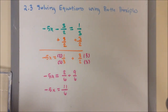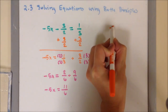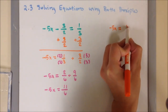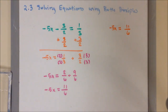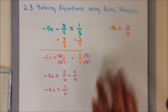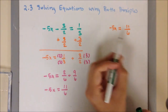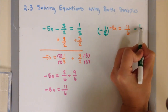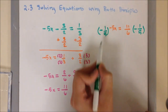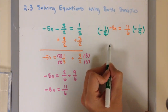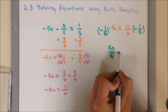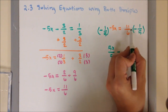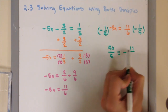I'm going to combine my fractions with the same denominator. Writing up here for more space: negative 5x equals 11 over 6. Now, I am going to apply the multiplication principle. The reciprocal of negative 5 is negative 1/5. Multiplying both sides by negative 1/5: negative times negative gives positive 5x over 5, and the right side becomes negative 11 over 30.